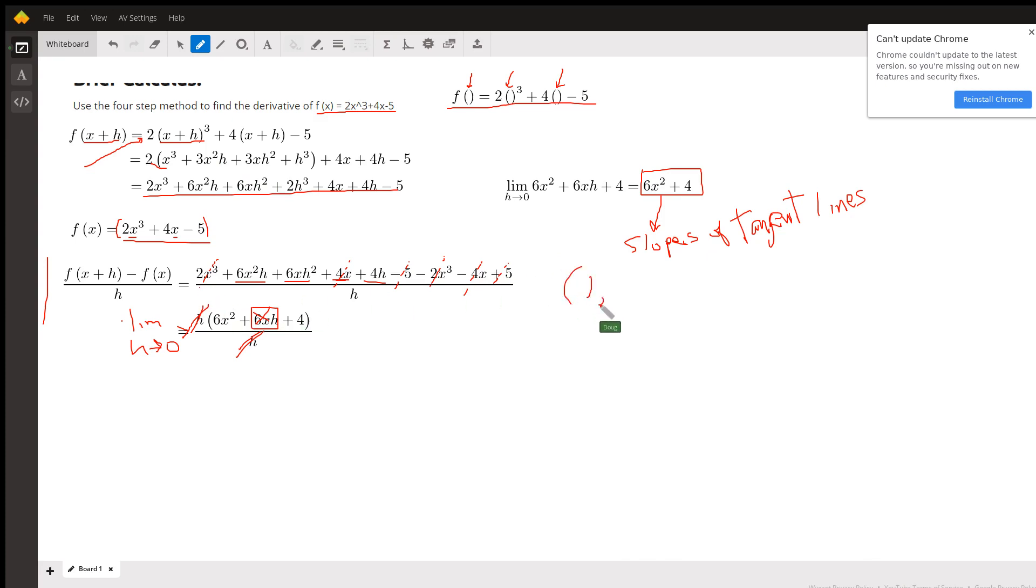At the point where x equals 1, the original function has a value of 1. I put 1 in for x.